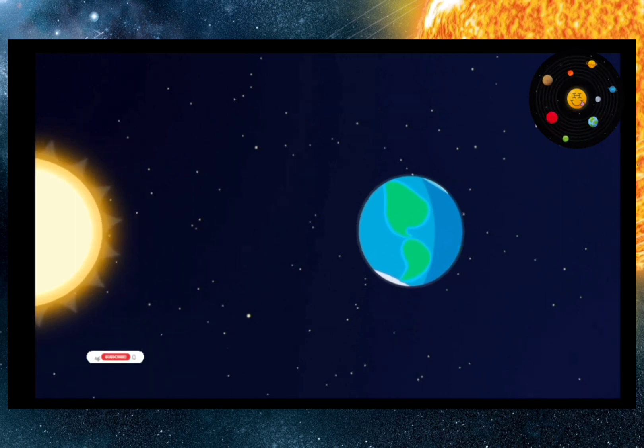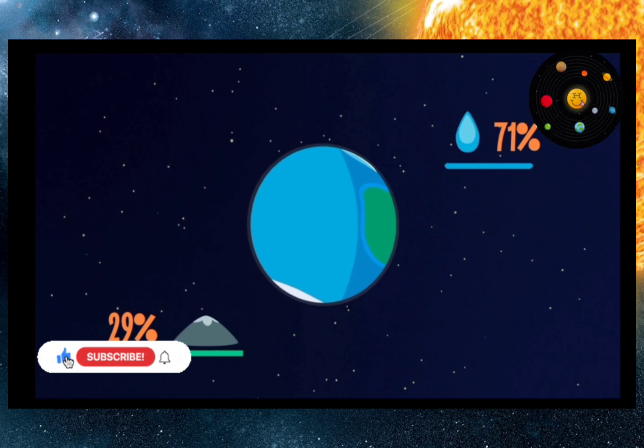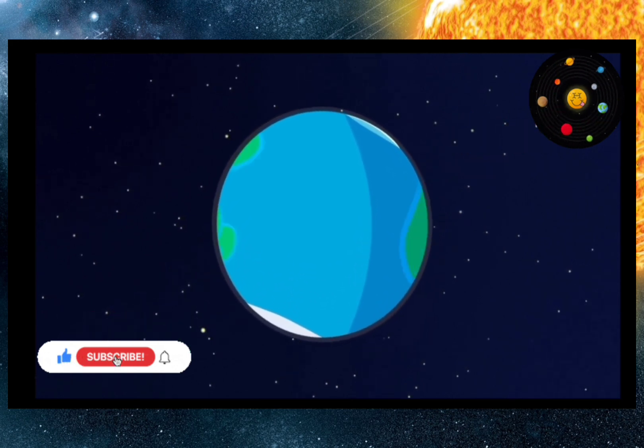Significant areas of our planet are covered with oceans. The largest of them is the Pacific Ocean, and it is bigger than all the continents combined.